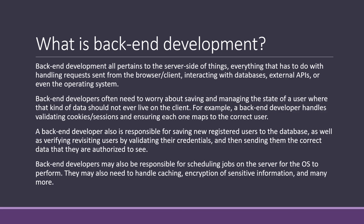For example, say you have a shopping website where people can add items to their cart — a lot of applications remember the items the user had added. That data is typically saved on the client side, but you usually send that data to the server side and save it there, so both the server and the front end have the information. Backend developers are also responsible for saving new registered users to a database, verifying revisiting users by validating their credentials, and sending them the correct data they are authorized to see. They may also be responsible for scheduling jobs on the server, handling caching, encryption of sensitive information, and many more.